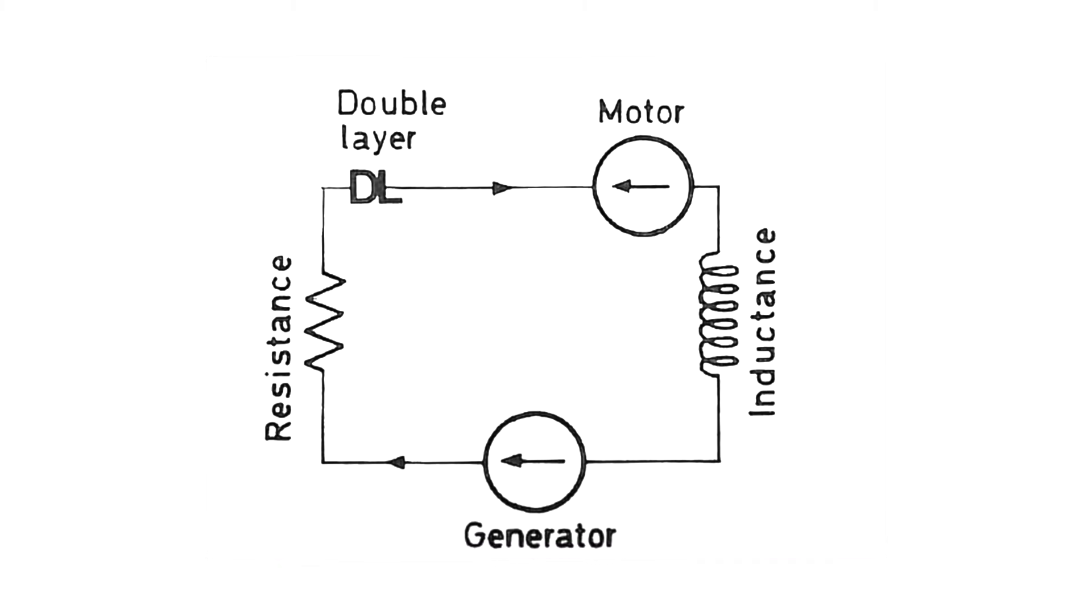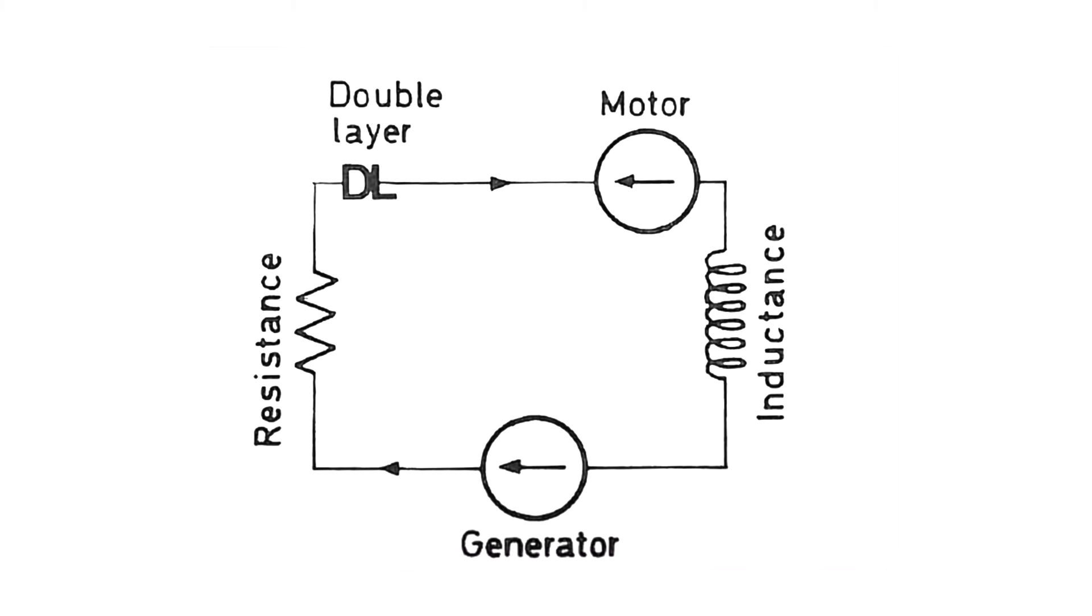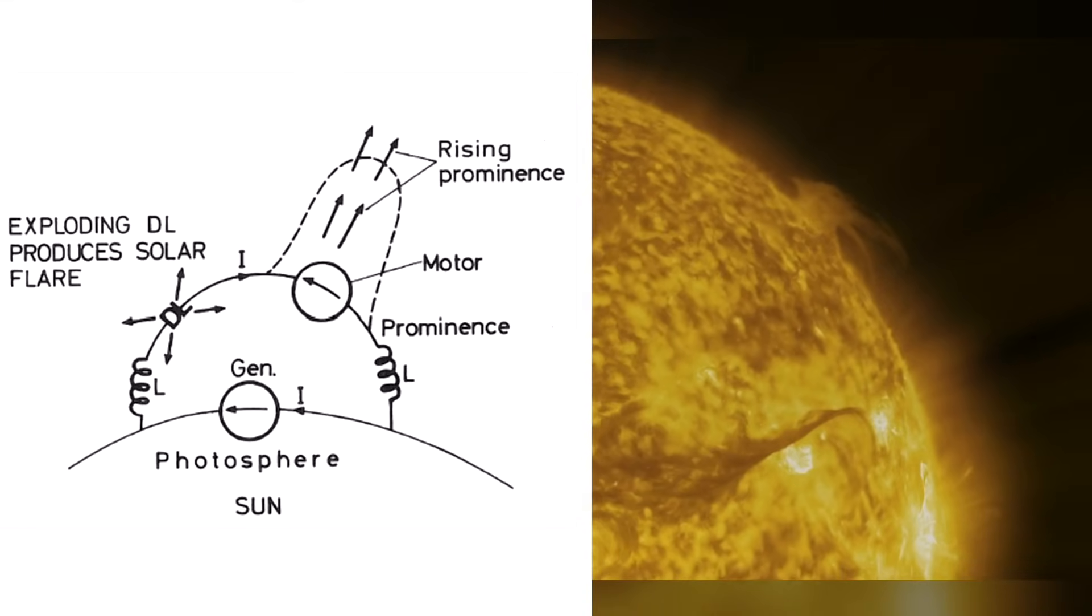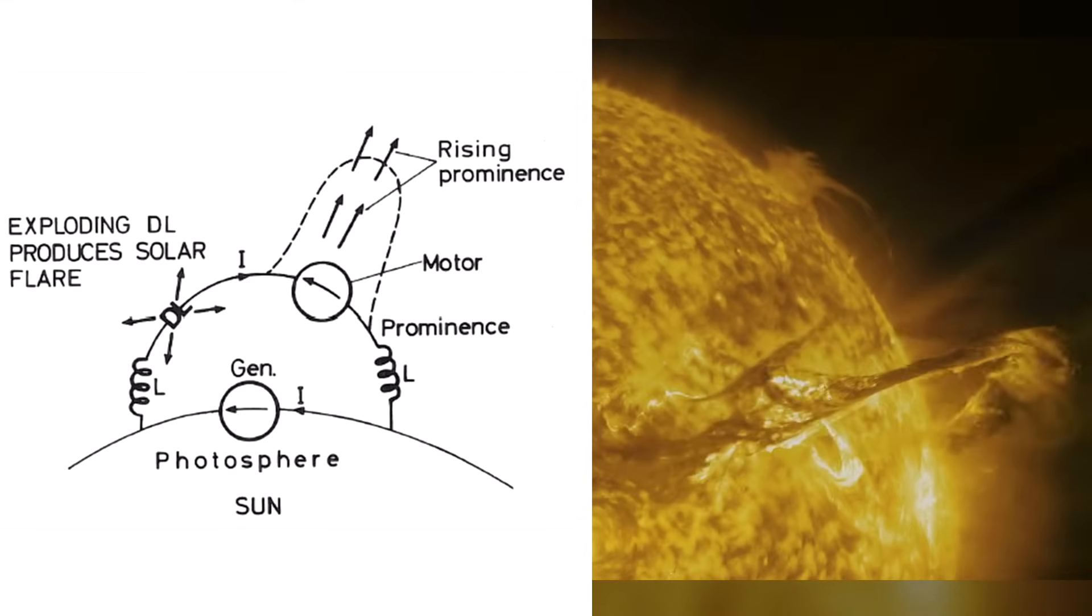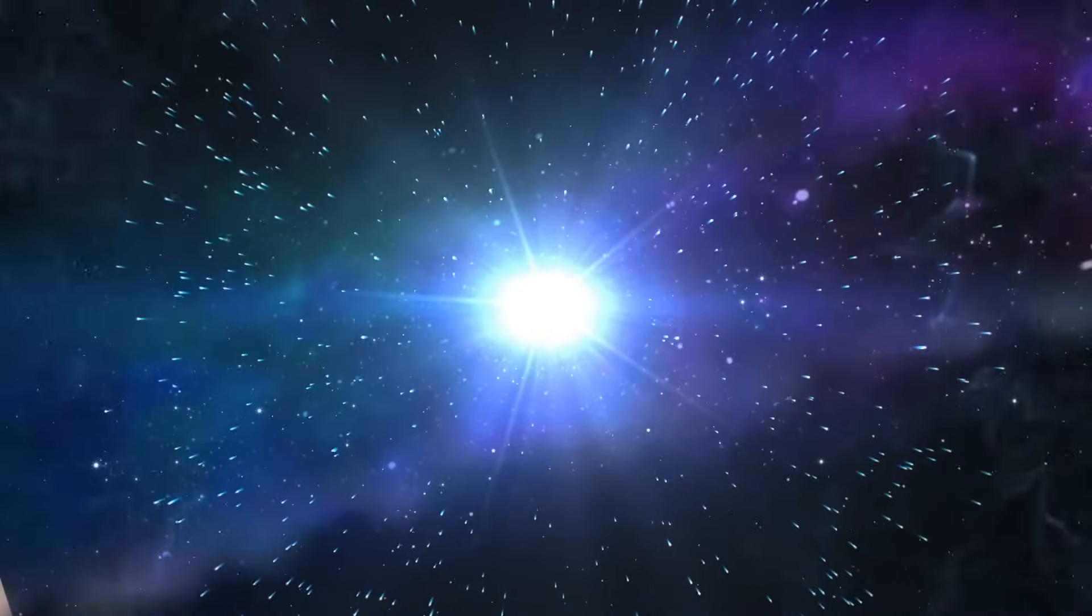At last, double layers can explode. Energy from the rest of the circuit flows into the break, and the explosion can release much more energy than is locally present. This effect is seen in flares on the sun and is likely responsible for the outbursts of novas, the so-called exploding stars.